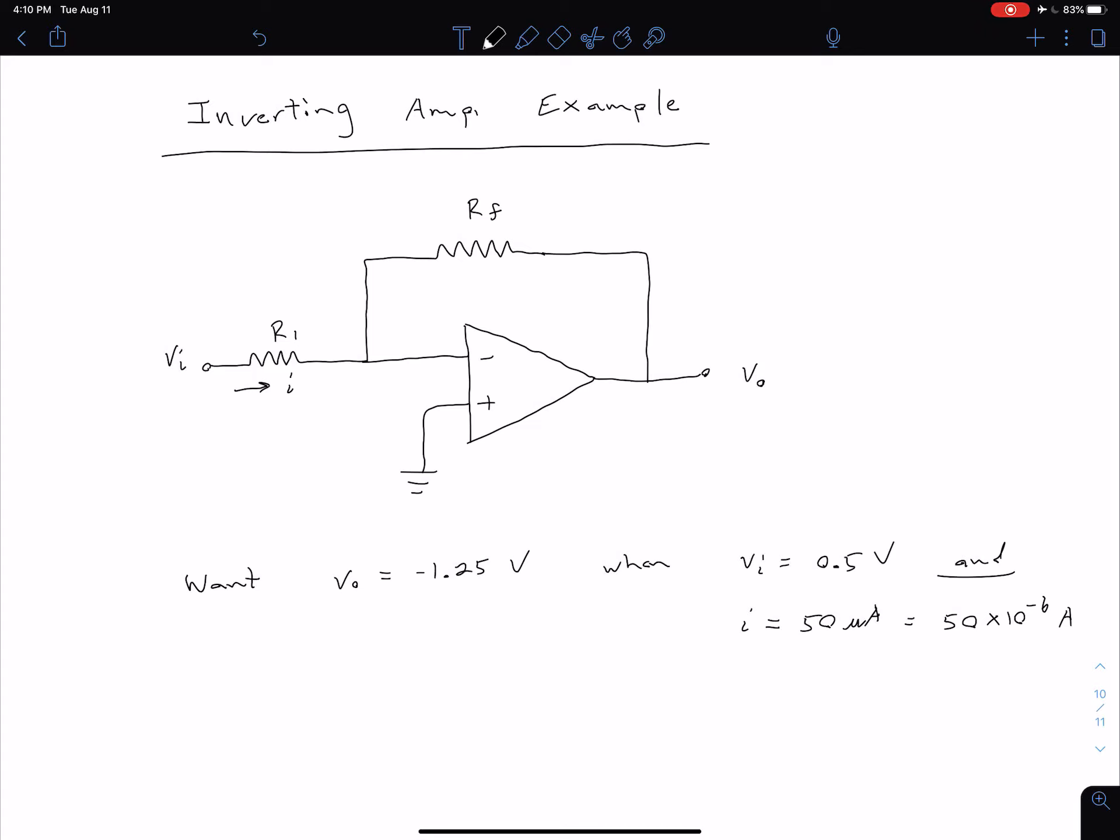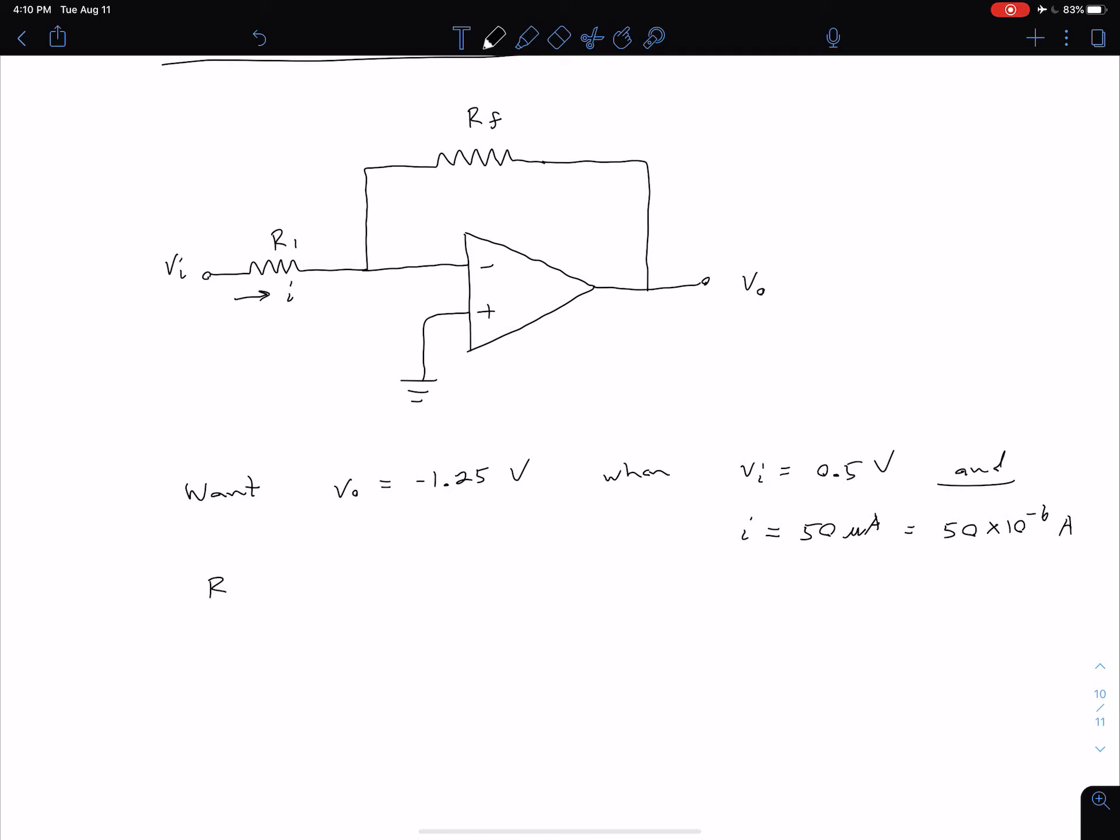And so, of course, what we're trying to solve for then is our values for resistors R1 and RF. So we want to know what values of those resistors are going to give us this desired behavior.